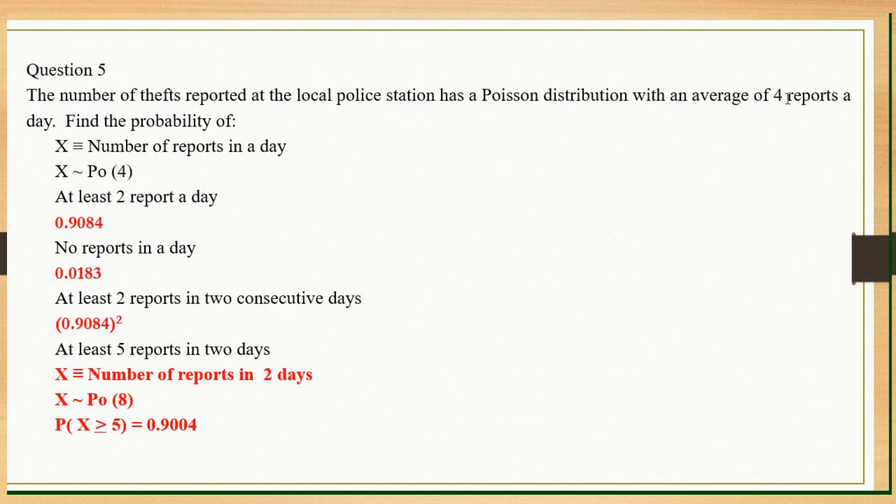Next one, Poisson distribution. 4 reports a day. So they want number of reports a day. Quite easy. Nothing to change here. At least 2 reports a day. No report a day. Just calculate using a Poisson distribution. At least 2 reports in 2 consecutive days. When you see the word consecutive, basically you don't need to change your lambda. No changing lambda. You will still use the same distribution. So you'll find the probability of at least 2 reports in a day first, which you have already done here. So you just take this and you power it to 2. Why power it to 2? Because they say 2 consecutive days. Meaning it's going to repeat 2 days in a row.